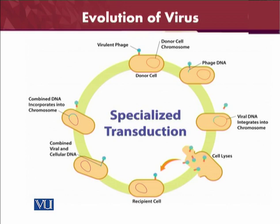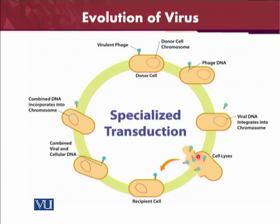From the transduction point of view, if we specifically insert a gene of our own interest, whether it can be transferred from one bacterium to another is the key question. Here bacteria number one and bacteria number two: if this phage carries some DNA of our own interest, when the phage replicates using the host machinery, that gene will be contained in the bacteriophages. These bacteriophages then infect another bacterium, transferring the gene of our own interest — this is called transduction.